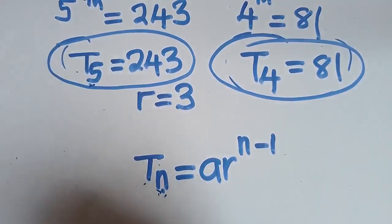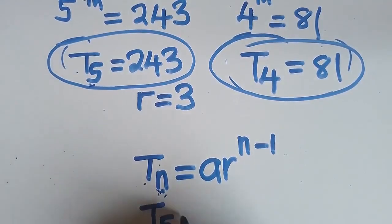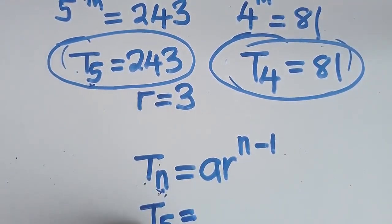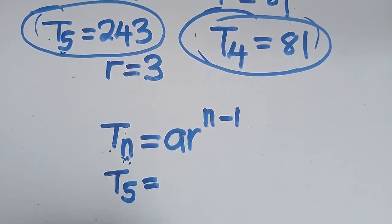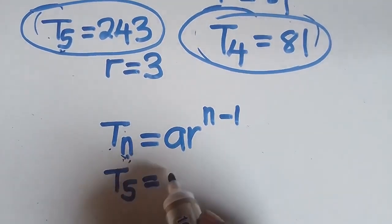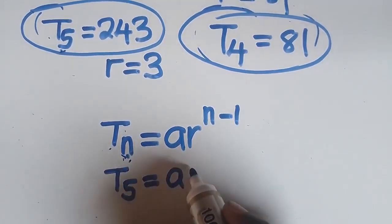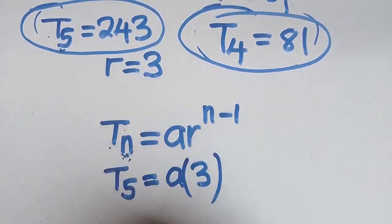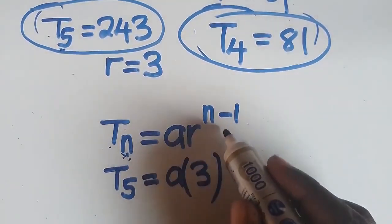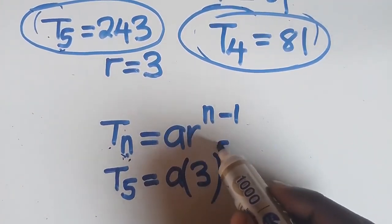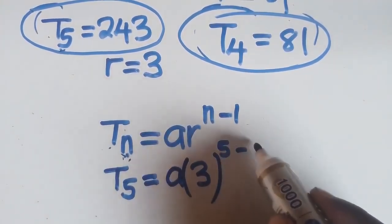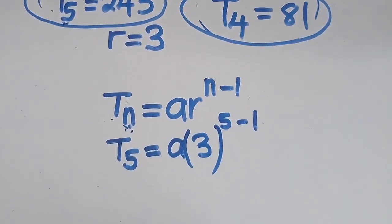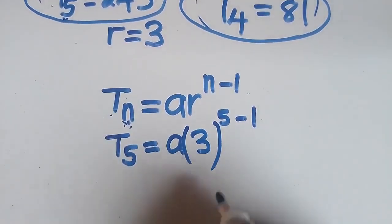So T5: where there is N, I put 5. A is the first term you want to find. What is your common ratio? It is 3. So you say 3 to the power of N, which is 5 minus 1. Once you reach here, then you are done.